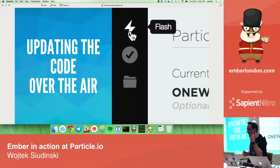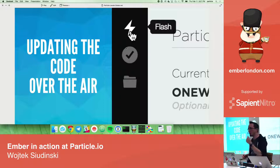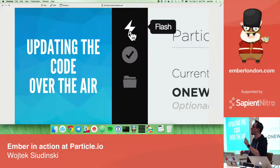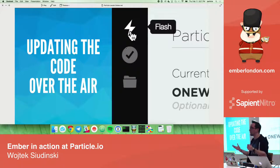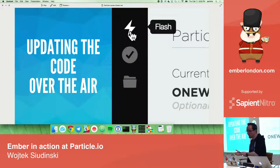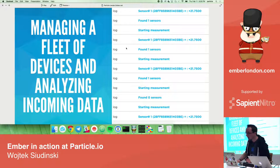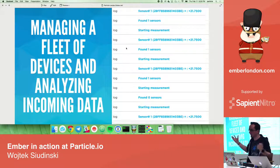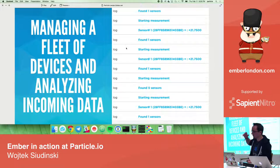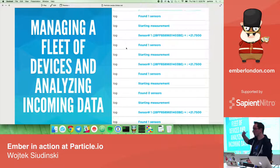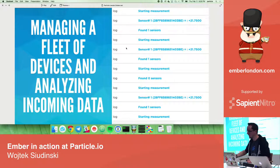Another cool thing is that since those devices are always, or at least most of the time, connected to the internet, you can update the code over the air. You don't have to be physically near the device. You can start with a prototype, scale, manufacture products like an intelligent thermostat, sell it to users, and then update the software while it's already in their hands. You can also manage a fleet of hundreds, thousands, or millions of devices, and react and analyze data to develop better software.